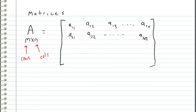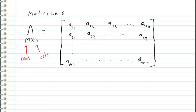If we continue this pattern down, we will reach A_M1 — we will be in the last row, which is the Mth row, and we will be in the first column. And similarly, if we continue this pattern in the other direction, we will reach A_MN, the Mth row and the Nth column. So basically, we can refer to any entry in this matrix using this notation.